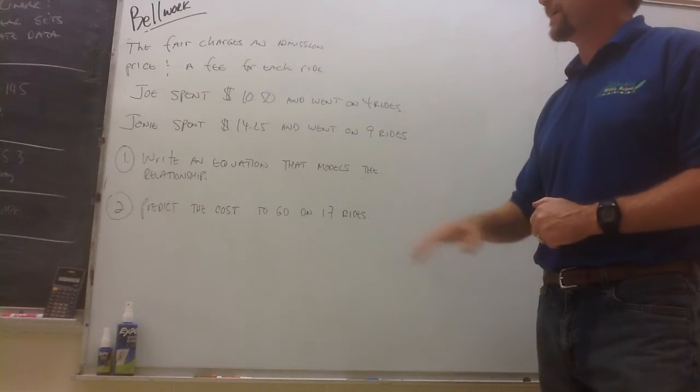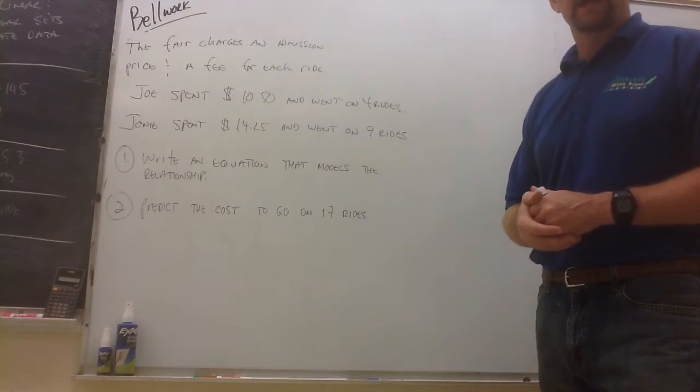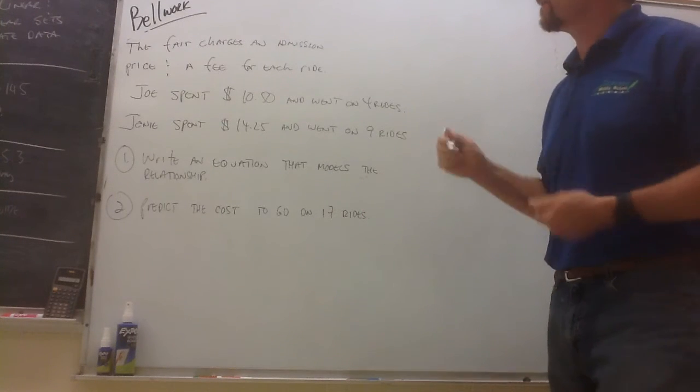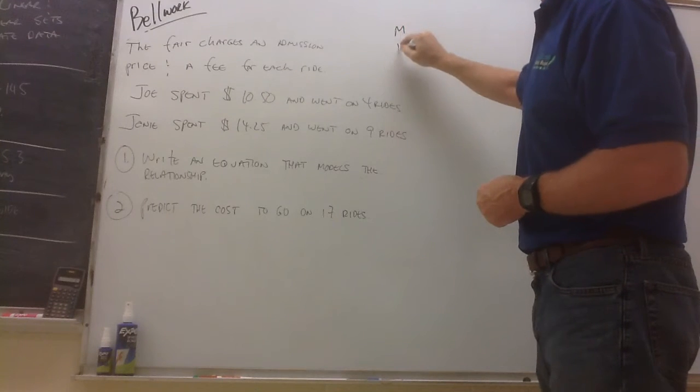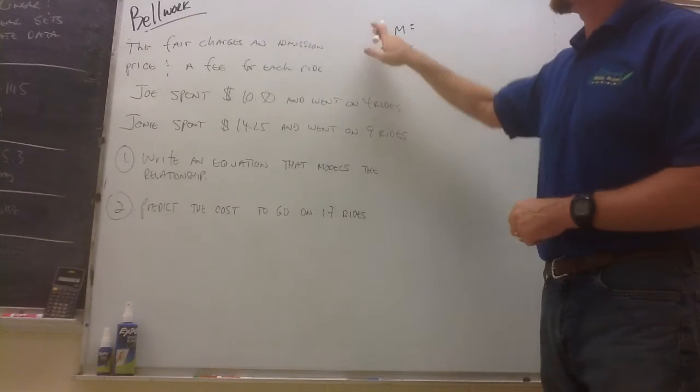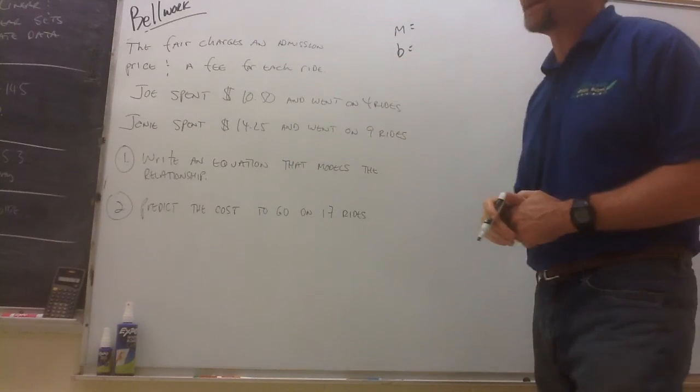Okay, if you think about this, the first thing you're going to have to do is write an equation. And if you're going to write an equation in slope-intercept form, of course, you're going to need the slopes and the y-intercepts. So we need to find out what's our slope and what's our y-intercept. Remember slope, we abbreviate with an m, and the y-intercept is abbreviated with a b.